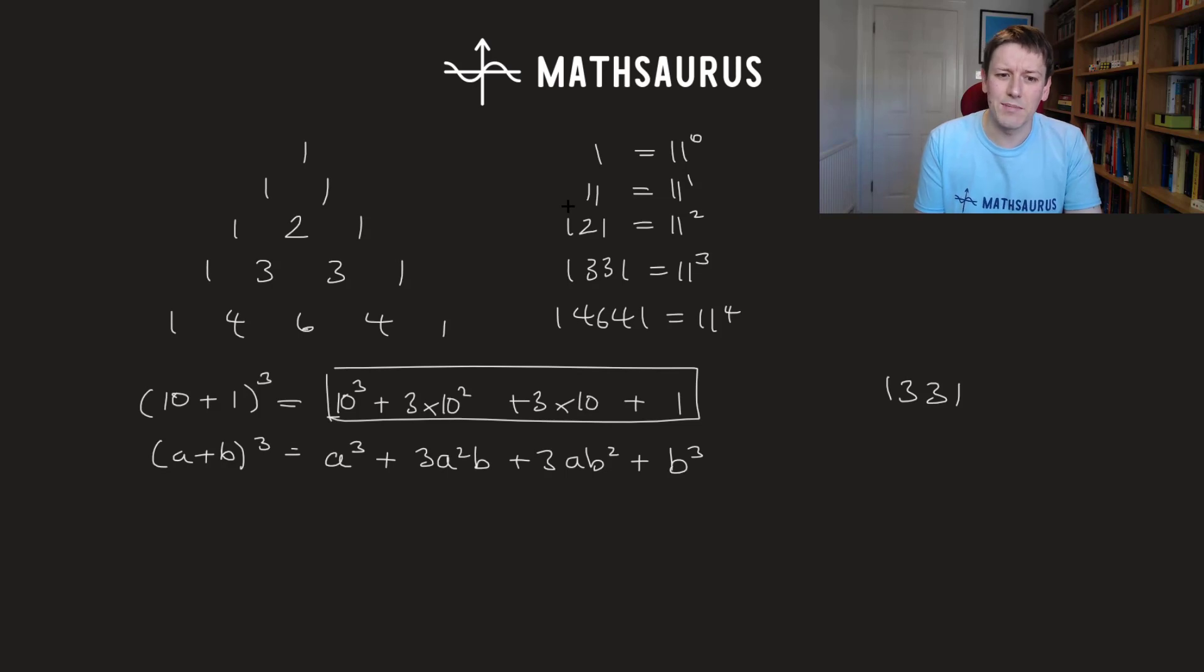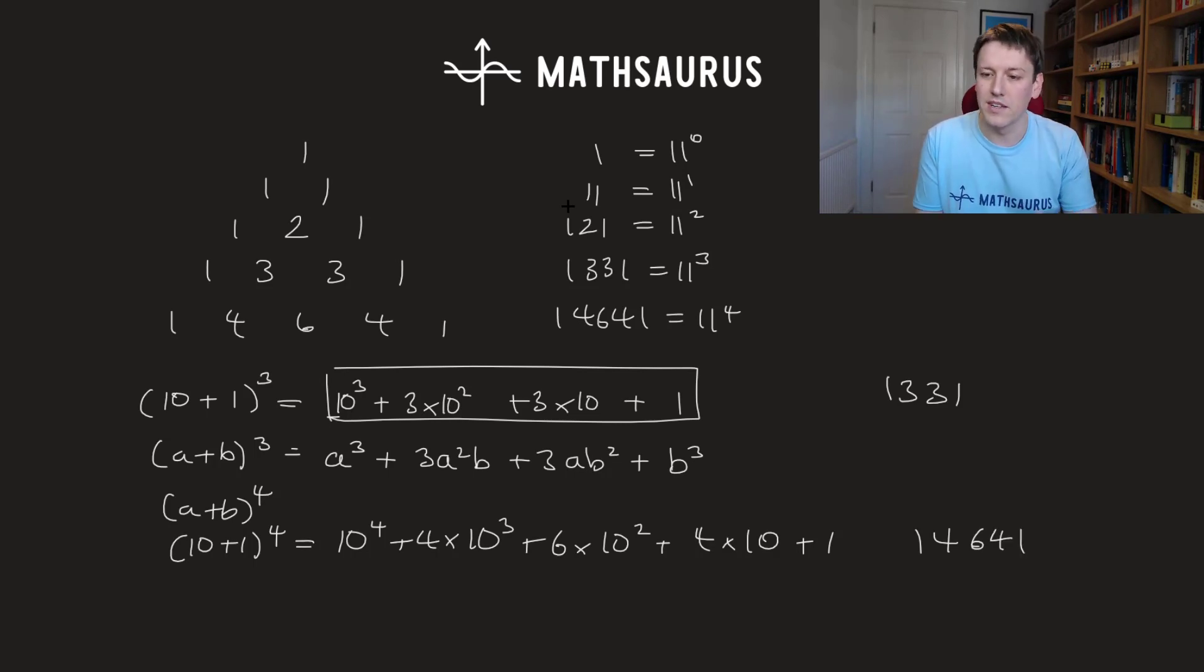Actually, you can see very easily because, if I did this with a plus b to the power of 4 as well, or if I do it with 10 plus 1 to the power of 4, I get the same thing. I get 10 to the power of 4 plus 4 times 10 cubed plus 6 times 10 squared plus 4 times 10 plus 1. So you see exactly those coefficients in Pascal's triangle become the digits of the number.